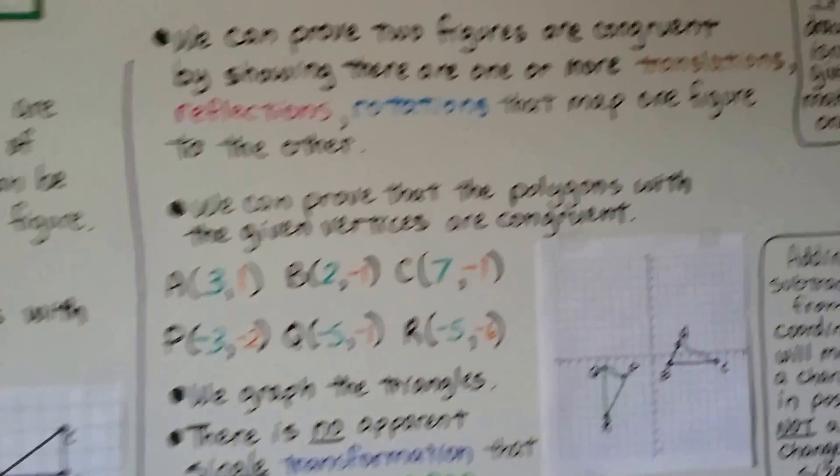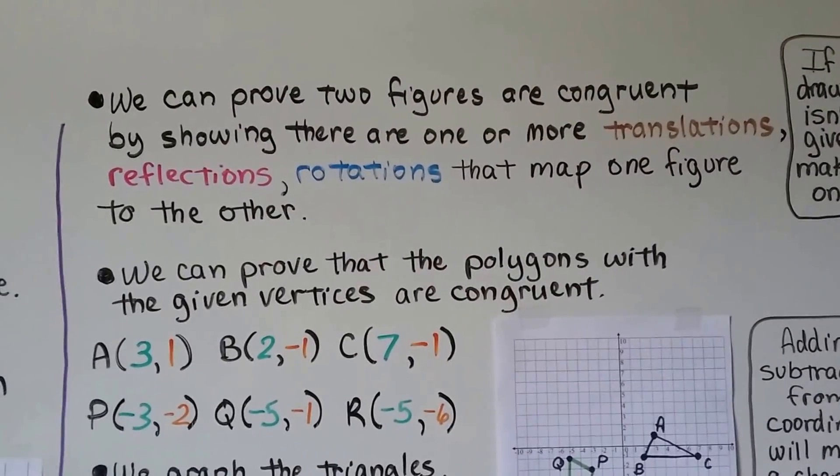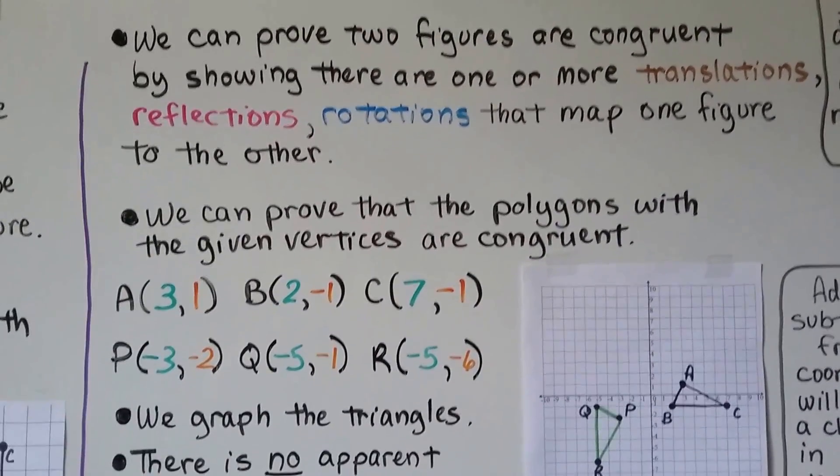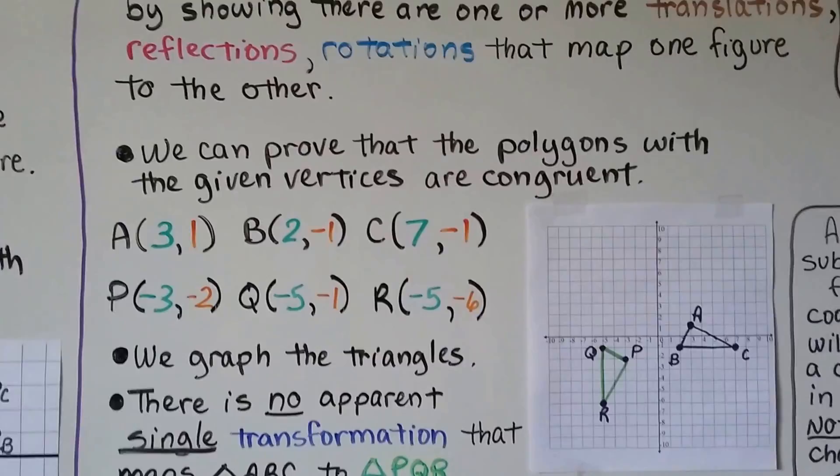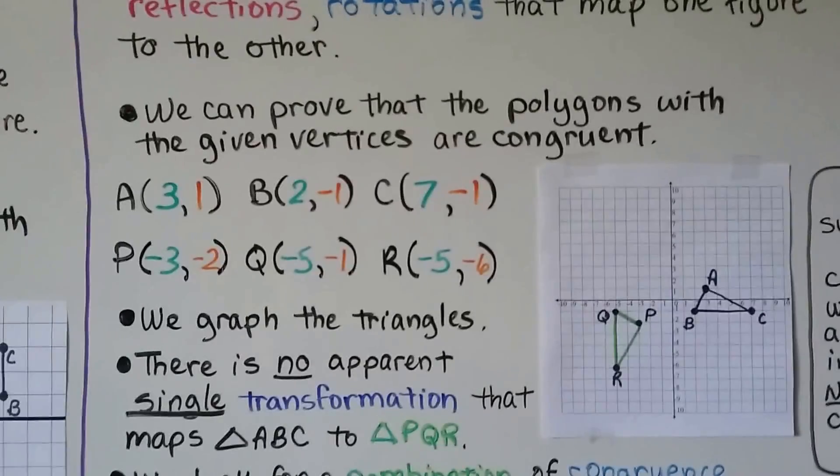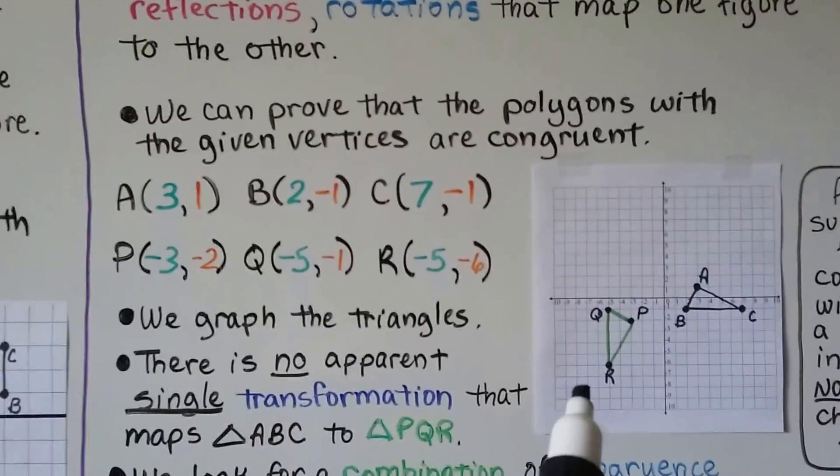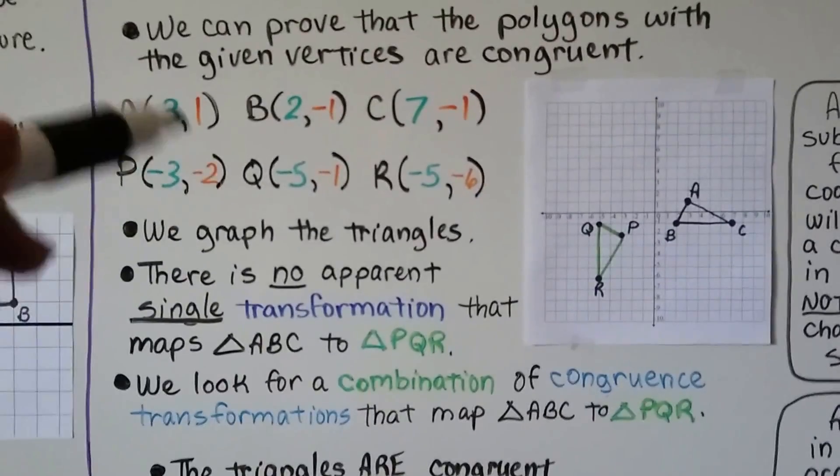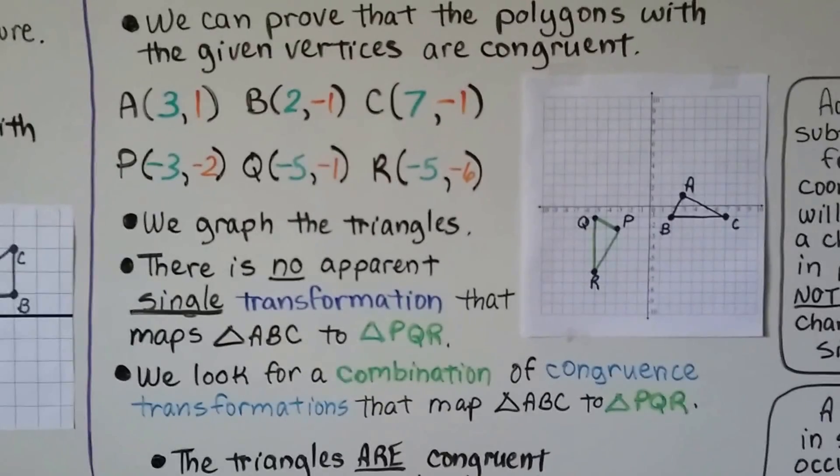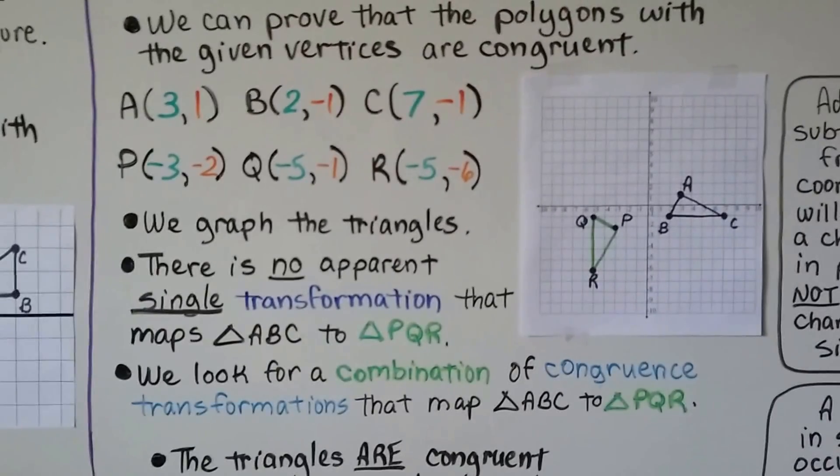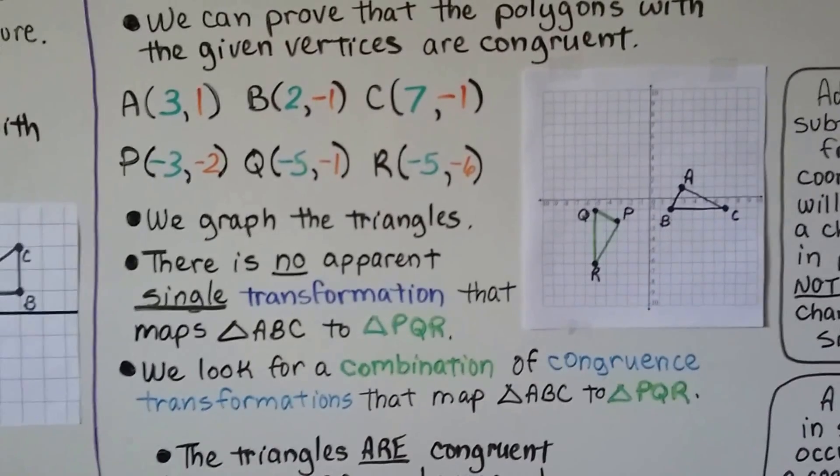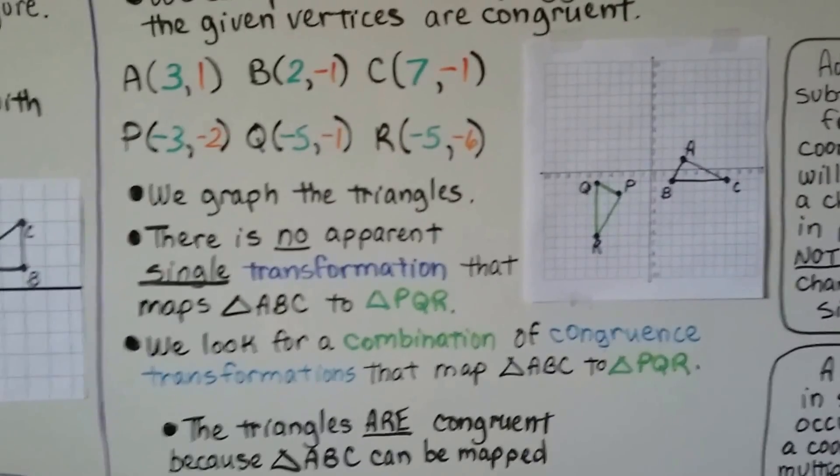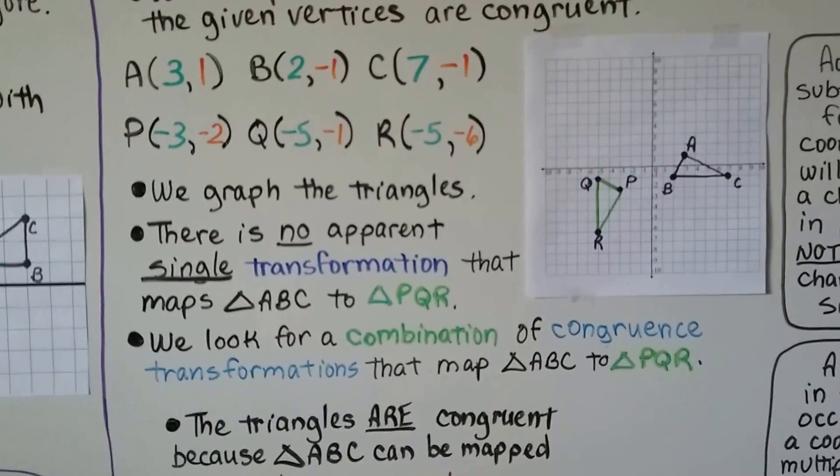And we can prove two figures are congruent by showing there are one or more translations, reflections, rotations that map one figure to the other. And we can prove that the polygon with the given vertices are congruent. So here we have triangle ABC and PQR. We have their ordered pairs. We graph the triangles according to these ordered pairs. And there's no apparent single transformation that maps triangle ABC to triangle PQR. We look for a combination of congruence transformations that map triangle ABC to triangle PQR.